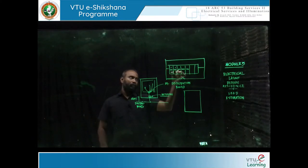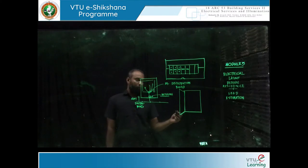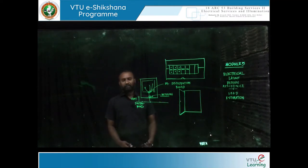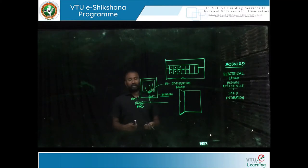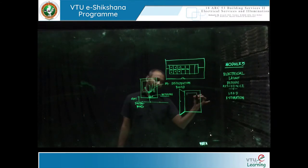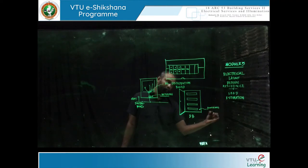Some circuit breakers will be on and some off. As a facility's area and load capacity increases, we will have a number of distribution boards. Depending on the area, sometimes more than one per floor, sometimes one per floor, sometimes one for a couple of floors — it all depends on the requirement and the strategies of the electrical engineer. What I'm drawing here is your distribution board with provisions for circuit breakers.